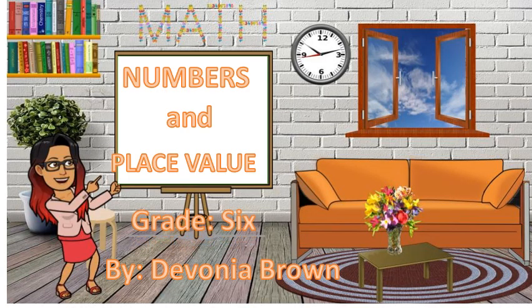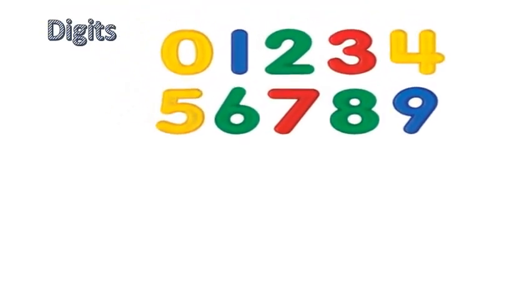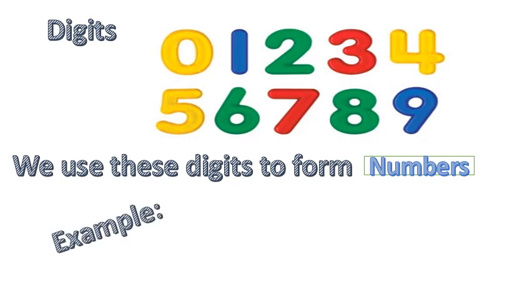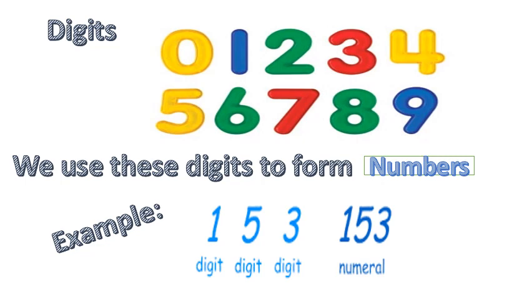Numbers and place value. A digit is a single symbol used to make numerals. Zero, one, two, three, four, five, six, seven, eight, and nine are the ten digits we use in everyday numerals. We use these digits to form numbers. For example, the numeral 153 is made up of three digits: one, five, and three.